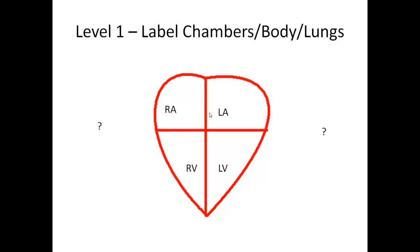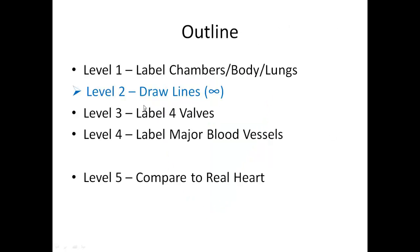Next, decide where to put the lungs and the body. The lungs go on one side and the body on the other. It would be nice if L for lungs matched L for left side, but it doesn't — the lungs are on the right side of the diagram. Just remember: L for lungs is not with the Ls on the left side. That completes level one.